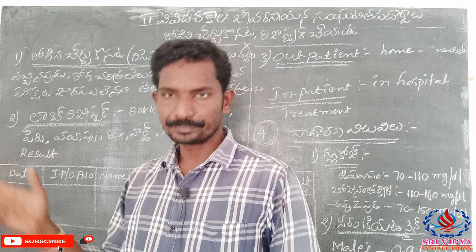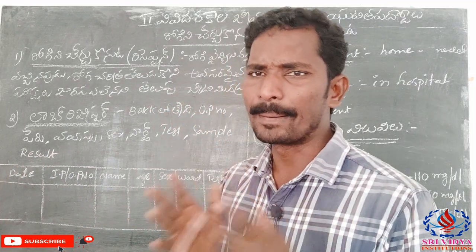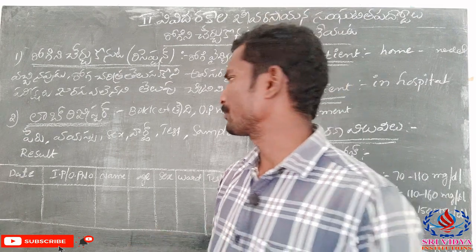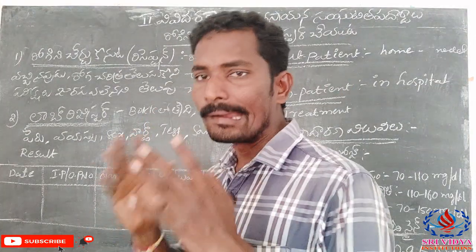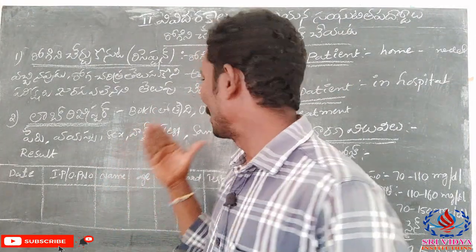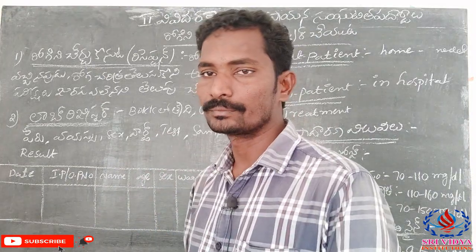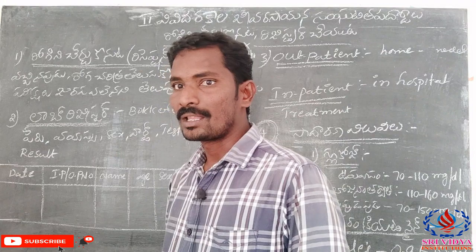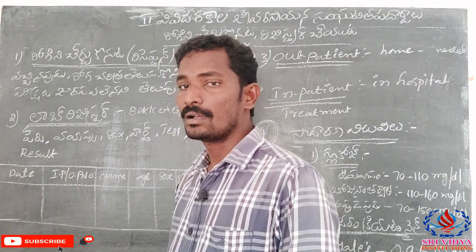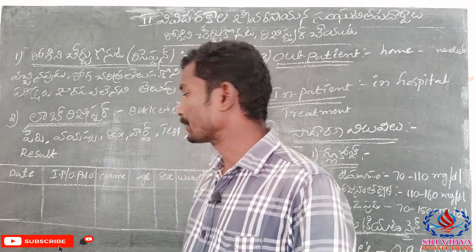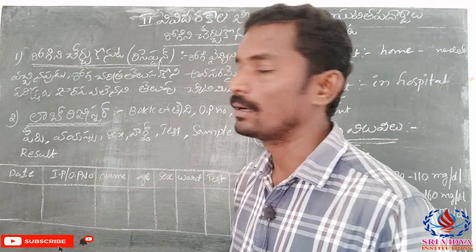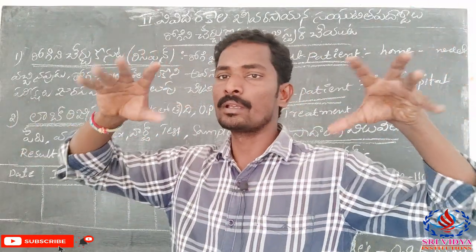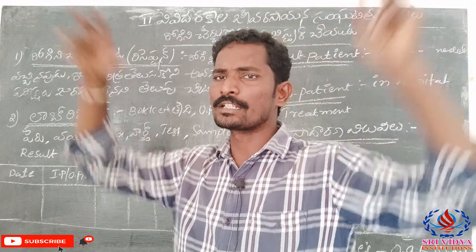In this lab register, we will be able to print an order. First, there is a date. There is an OP number. There is a patient name, male or female. For example, there are some specializations — the eye specialist, the nose specialist, the heart specialist.